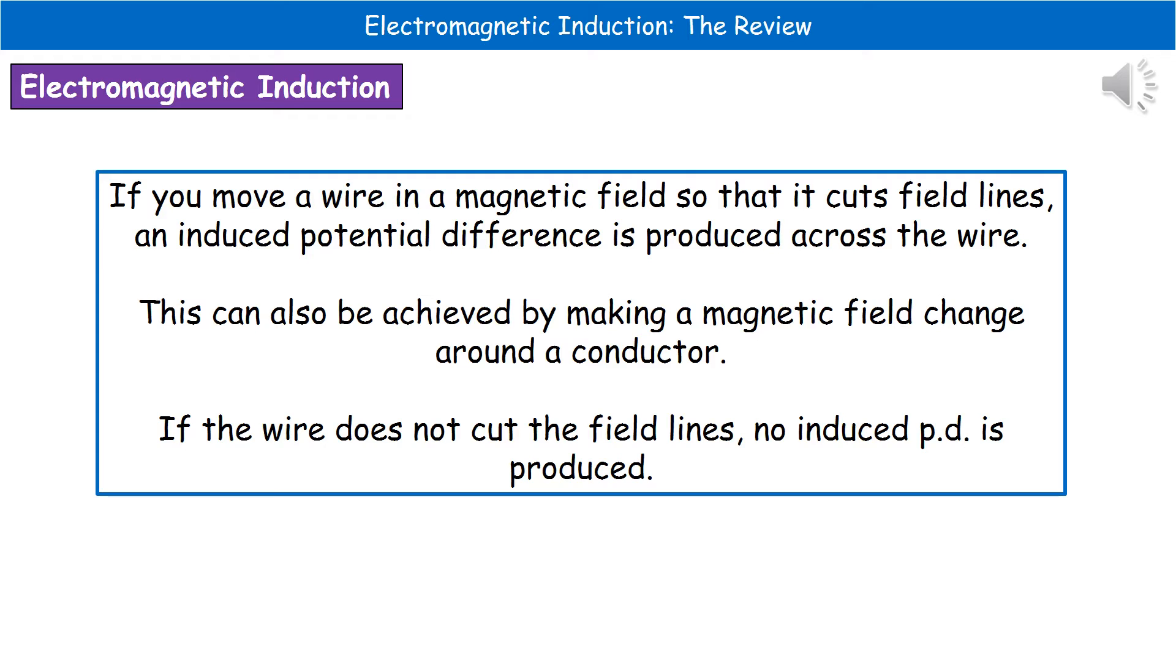Another way that we can actually achieve that is by making the magnetic field change around the conductor. So we've got to have some way of having the field lines cut, whether it be moving the wire or moving the magnet in some way. If we don't have our wire cutting field lines, then we won't induce a potential difference in the wire itself.